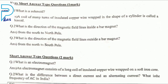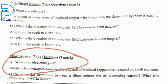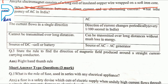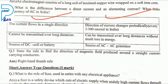Short answer type questions: What is an electromagnet? An electromagnet consists of a long coil of insulated copper wire wrapped on a soft iron core. The main differences between DC and AC: DC means direct current, AC means alternating current. AC changes its direction periodically; DC only follows unidirectional current — the current flows in a single direction.